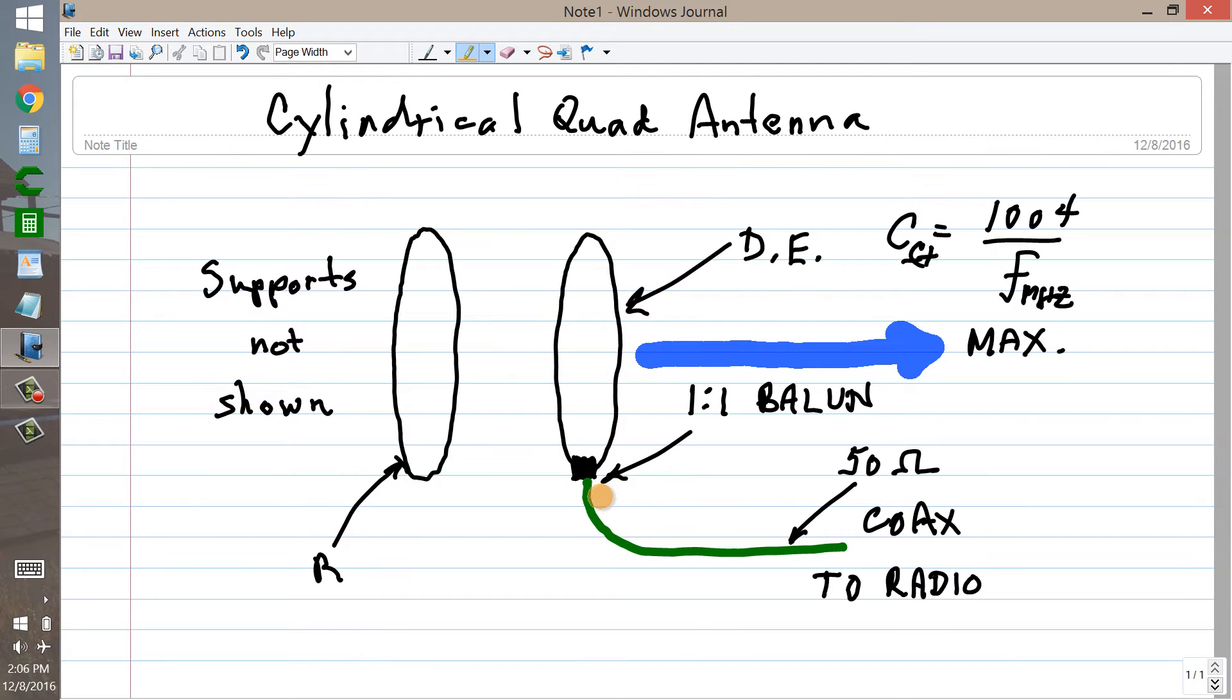But notice that a balun coil provides for the appropriate balanced, unbalanced conversion to the coaxial cable to the radio. It's not a perfect 50 ohm match, but it's pretty decent and will suffice for all intents and purposes.